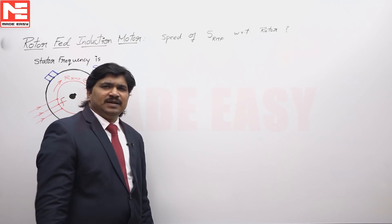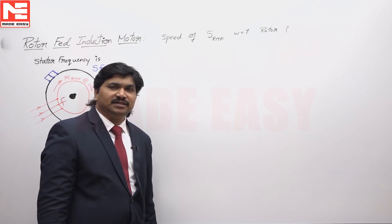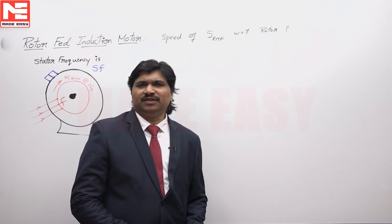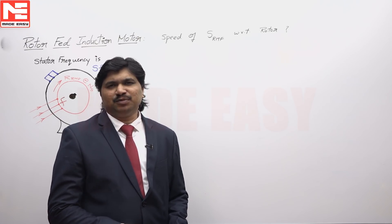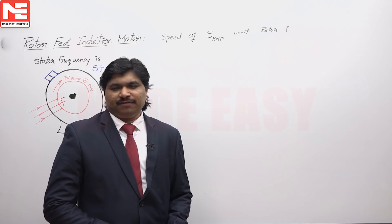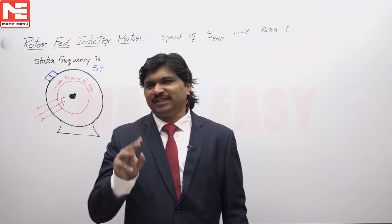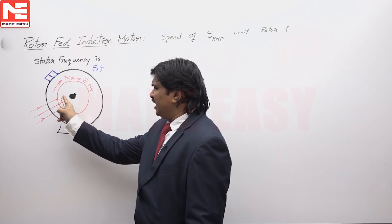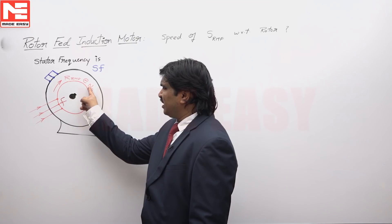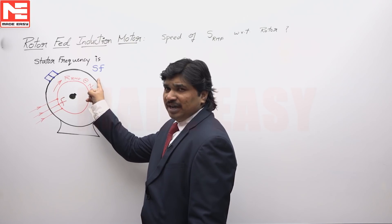Conventionally with slip ring motors we operate through the stator, but if you are asked to operate through the rotor, the analysis is as follows. Whenever we apply a three-phase supply across a three-phase winding, an RMF is produced which always rotates at synchronous speed. If the rotor contains a three-phase winding and you apply a three-phase supply across the rotor through slip rings, it will immediately produce an RMF rotating at Ns.